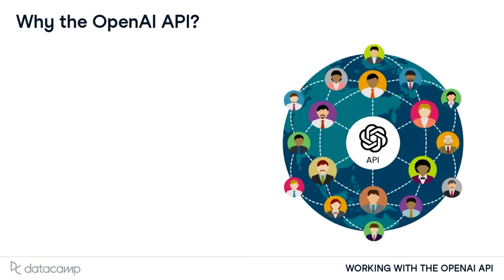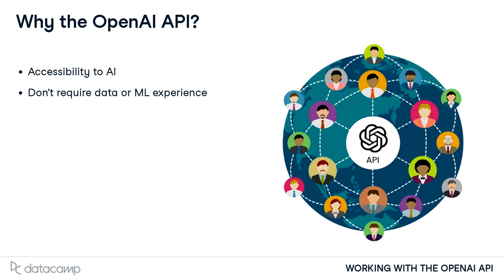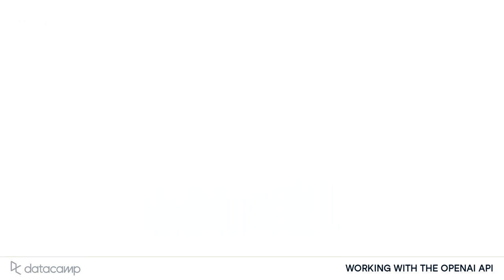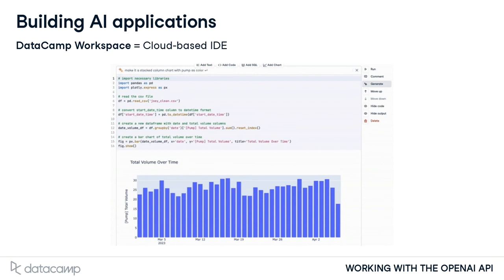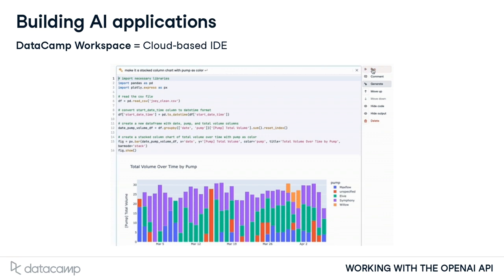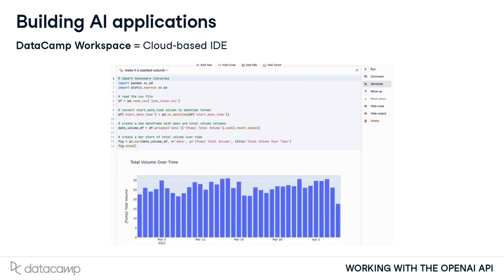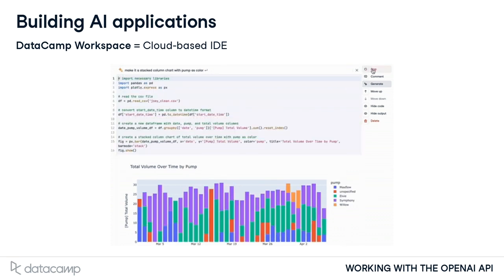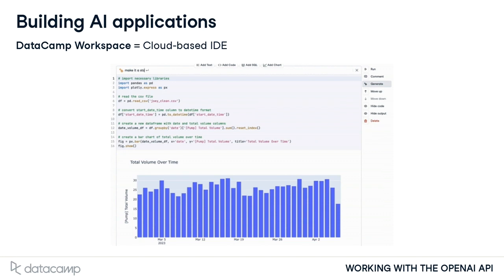The beauty of making these models available via an API is that software engineers, developers, or anyone else wanting to integrate AI into products and services can now access and implement these models without needing a background in data science or machine learning. The OpenAI API has enabled the development of powerful new features that before would have required enormous computational resources and data. In the example shown from DataCamp Workspace, we developed a feature where users can write or fix code by providing an instruction, all built on the OpenAI API.